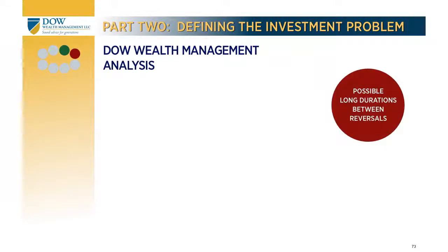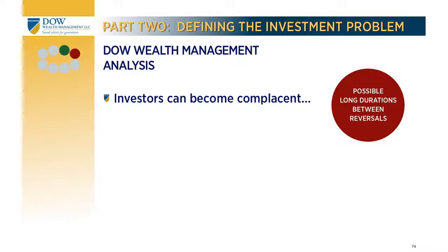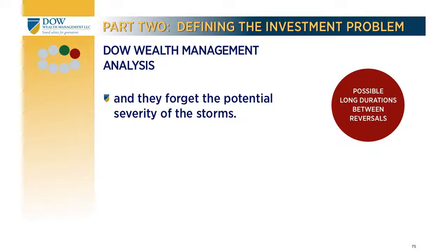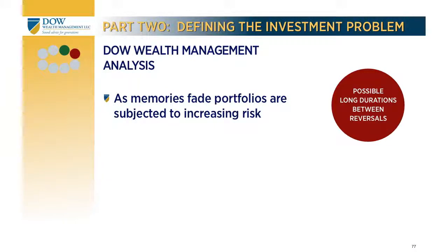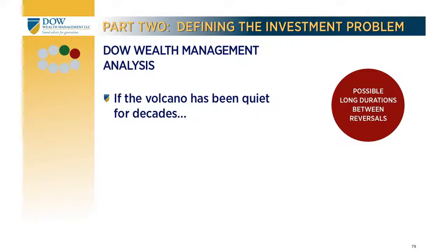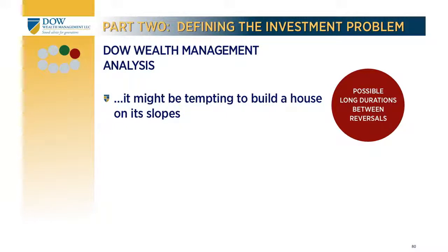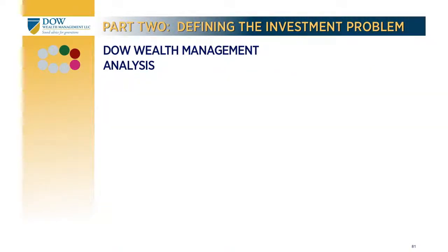Another aspect of these abrupt changes: sometimes trends can last for exceedingly long periods before a sharp reversal. It is during such periods that many investors become complacent — they forget how quickly the financial weather can change and how harsh the storms can be. Financial markets almost set traps for investors: as memories of bad times fade, many investors subject their portfolios to increasing amounts of risk, so when the reversal finally comes, their portfolios are badly positioned to survive. If the volcano has been quiet for decades, someone without the perspective of time might be tempted to build his house on its slopes.